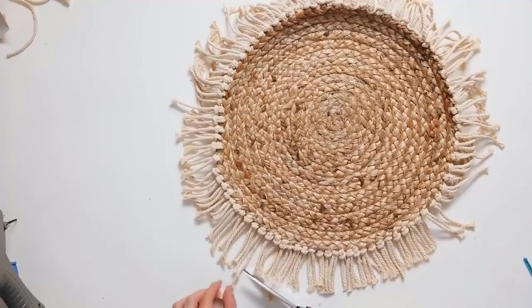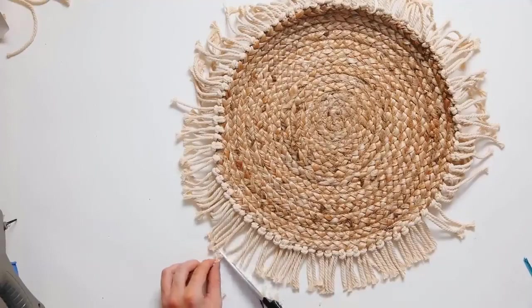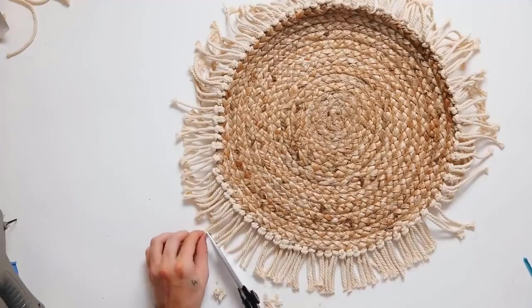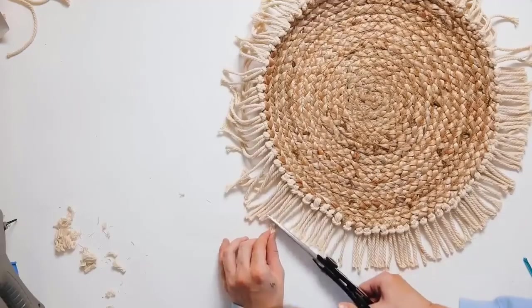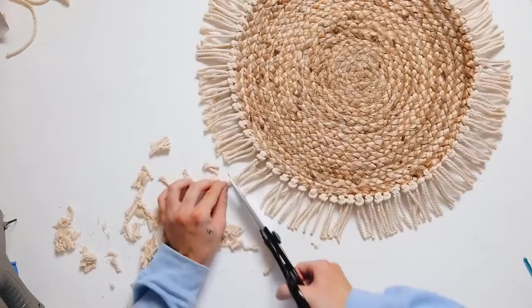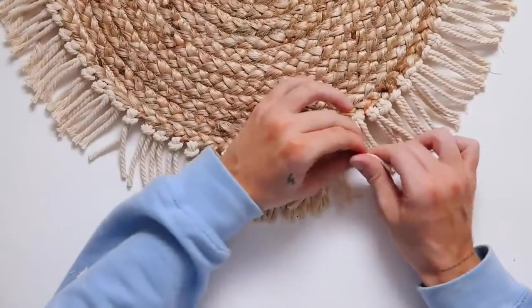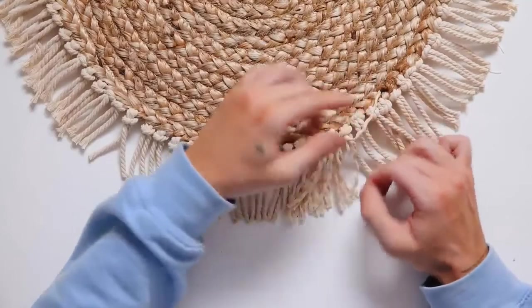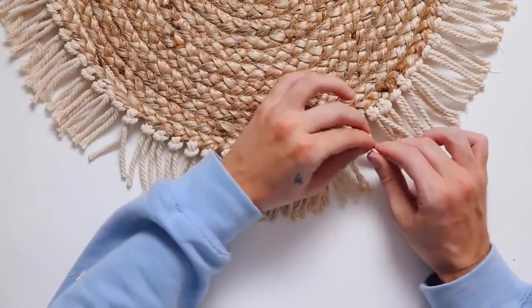Once all the tassels are added, I went around and cut any stray ends. I wanted them to be about two and a half inches in length, but you can adjust this to however wide you want. Keep in mind if you make them longer, it's going to have a hard time standing up when you put it on the wall.